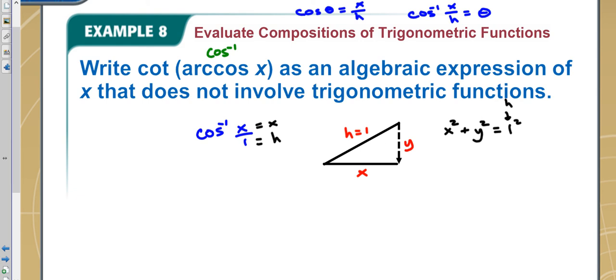Now if I'm solving for y, y squared equals 1 squared is 1 minus x squared. I just subtracted the x squared over—I subtracted x squared from both sides and I got this.